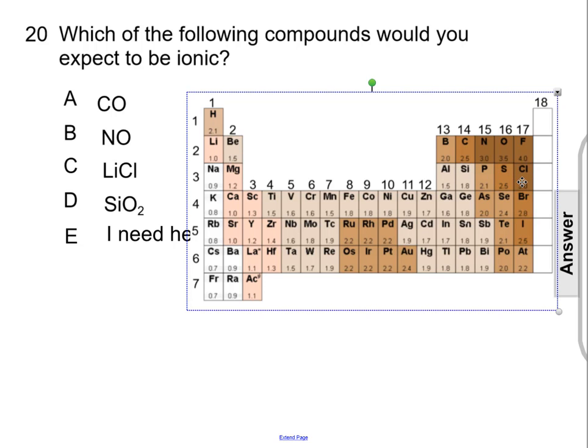Silicon and oxygen have a difference that's quite small, between 1.8 versus 3.5, so 0.7.